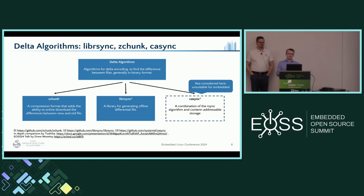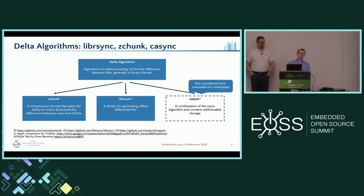A project also mentioned at this conference is the casync project — a combination of the rsync algorithm with a content-addressable storage. Unfortunately, it's not well suited for the embedded use case, because the content-addressable storage is a huge set of files and a directory structure, and because the download uses many HTTP requests, which can be costly in compute power on an embedded device, also making the update take longer.